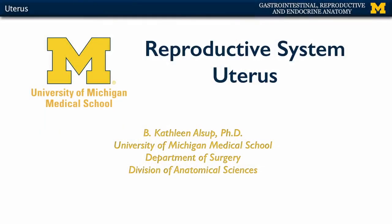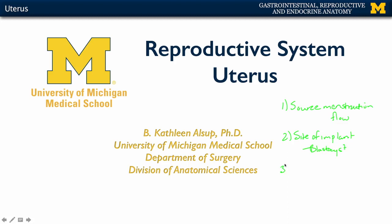Let's start off our discussion with the uterus in terms of talking about its three main functions. In no particular order, this is going to be the source of menstrual flow — we'll talk about which particular layers of the uterus will provide this. It is also the site of implantation of a blastocyst, and lastly, this is going to be where the fetus will develop during pregnancy.